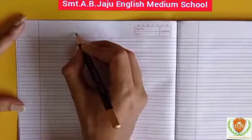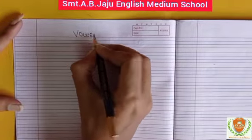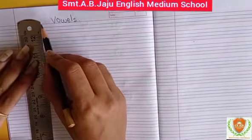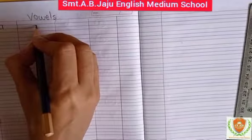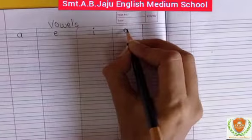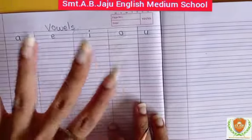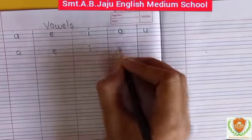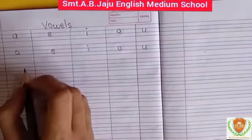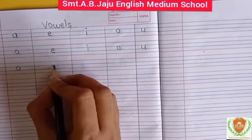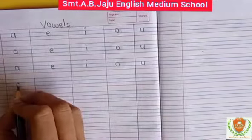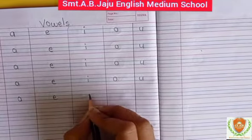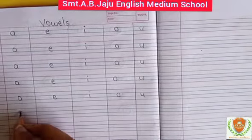Now, turn the page. We have to write the heading: Vowels. We have to write vowels here: A, E, I, O, U. There are 5 vowels. We have to write vowels on this page as well: A, E, I, O, U. These are the 5 vowels.